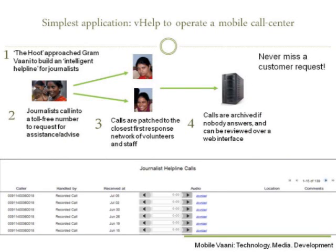Let's start with our simplest application called V-Help. You can specify a list of first response staff. Whenever somebody calls, we will patch their calls with one of these response staff. If nobody picks up, the call will get archived and you can access the caller ID and the message over the internet. Thus, what you effectively get is a mobile call center. Your staff can be anywhere in the field and can respond to customer requests on the fly. And because even missed calls get archived, you can forget about missing any customer needs.